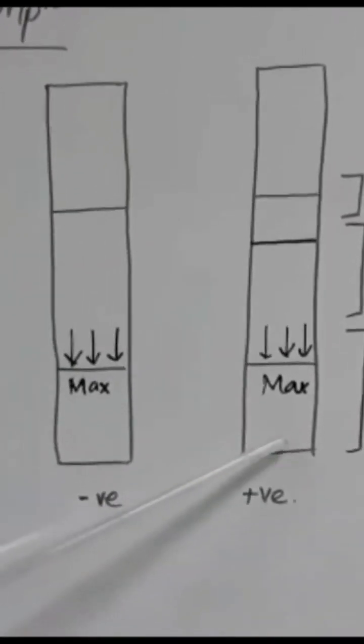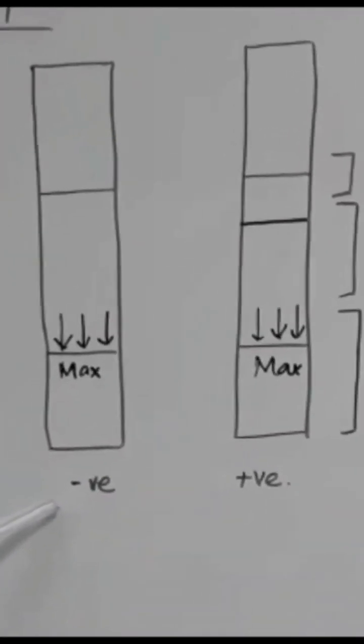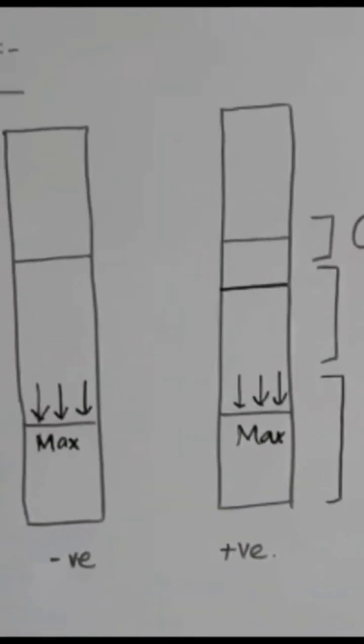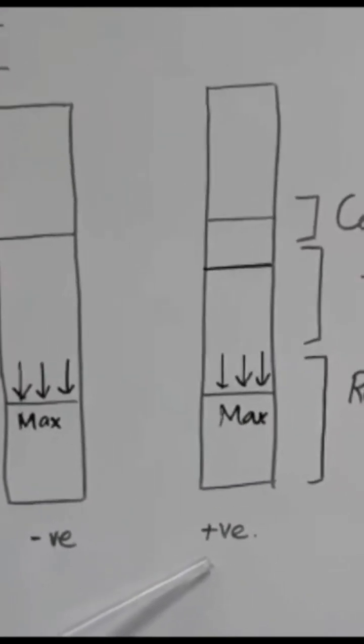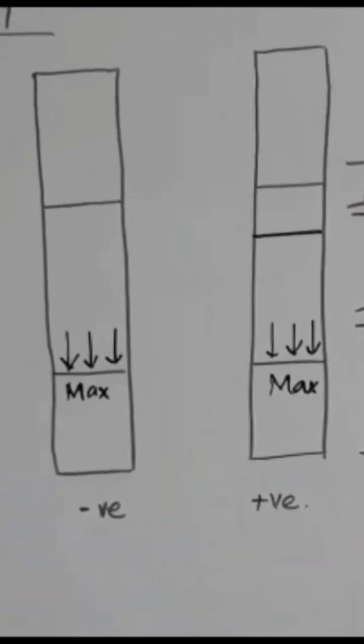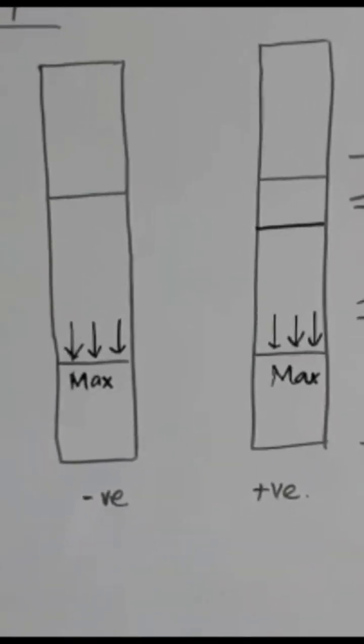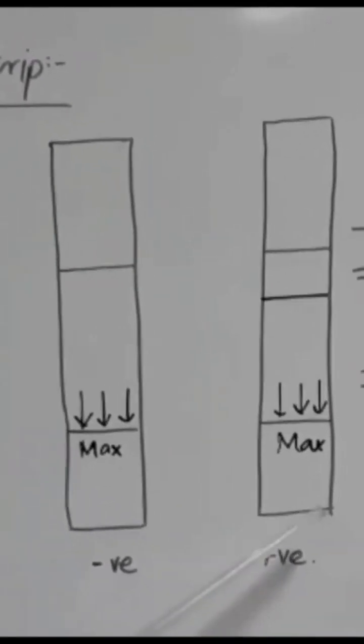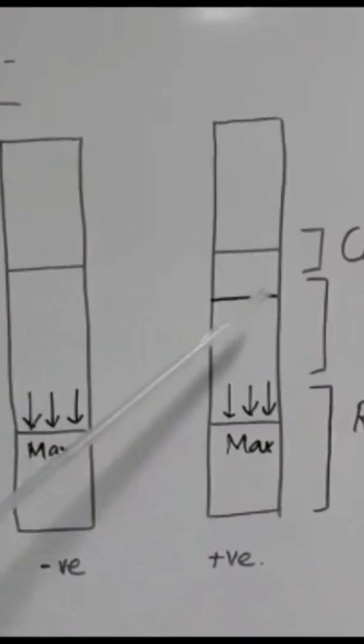Now these two figures show us what a negative result looks like and what a positive result looks like. For this purpose, let us study the zones which are present normally in our pregnancy strip.